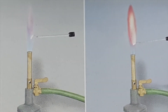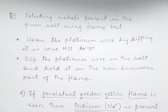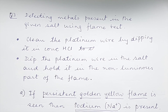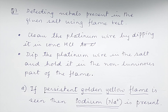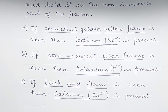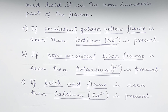This is how we write flame test answers: Bullet 1 — clean the platinum wire by dipping it in concentrated hydrochloric acid. Bullet 2 — dip the platinum wire in the salt and hold it in the non-luminous part of the flame. Then: (a) if persistent golden yellow flame is seen → sodium Na⁺ is present; (b) if non-persistent lilac flame is seen → potassium K⁺ is present; (c) if brick red flame is seen → calcium Ca²⁺ is present. Copper also has a flame color, but it is not in the Class 9 syllabus.